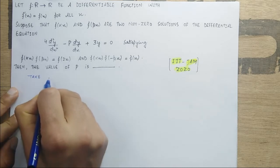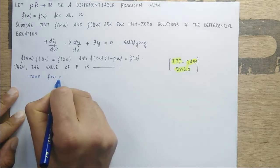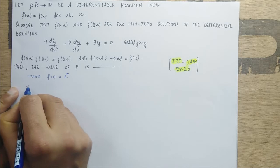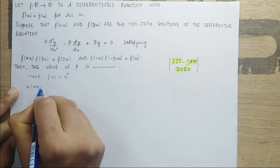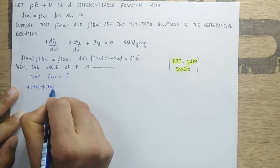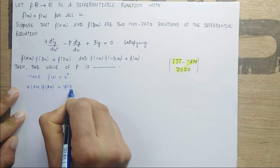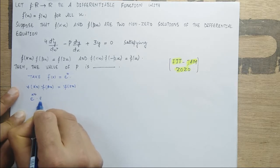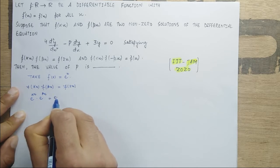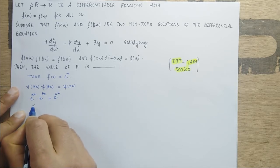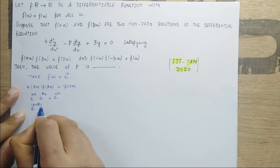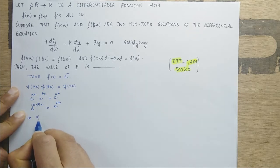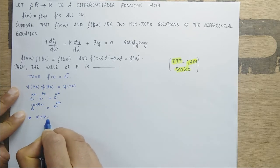Take f(x) = e^x, since the derivative of f equals f itself. Now f(αx)·f(βx) = f(2x), so e^(αx) · e^(βx) = e^(2x), which gives e^((α+β)x) = e^(2x). Since the bases are equal, this yields α + β = 2.